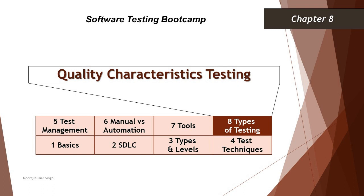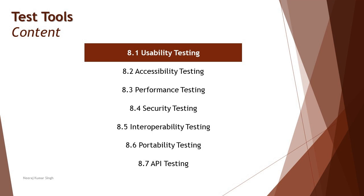Hello friends, greetings for the day, welcome back to another tutorial on our software testing boot camp. Today we are getting started with our last chapter, chapter 8, talking about various other types of testing like quality characteristics testing. We'll be understanding different non-functional quality characteristics based testing — for example, usability, accessibility, performance, security, interoperability, portability, API testing, etc.